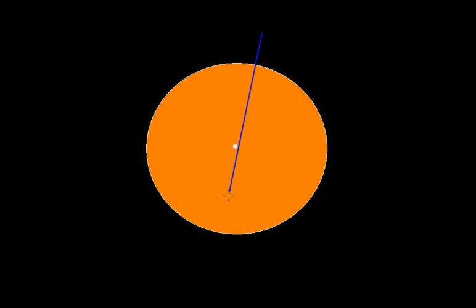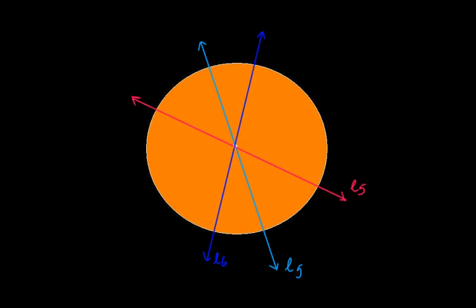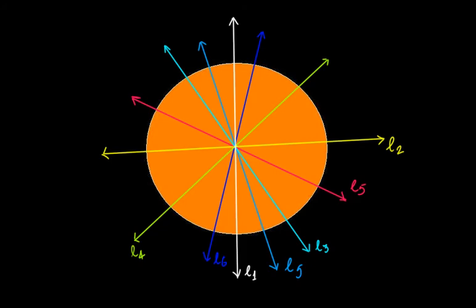Similarly, even this will be a line of symmetry, that is L5, and even this will be a line of symmetry, that is L6. The discussion is similar to what we have done until now. We can have another line of symmetry as well. So if I show you all those lines of symmetry, you can see we have L1, L2, L3, L4, L5, L6, and L7.